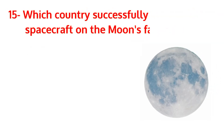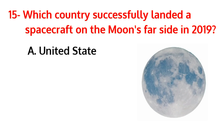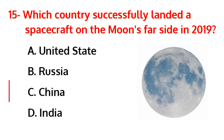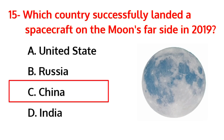Which country successfully landed a spacecraft on the moon's far side in 2019? The correct answer is option C, China.